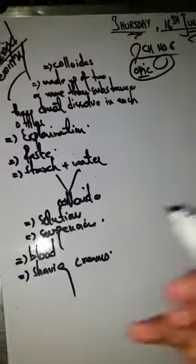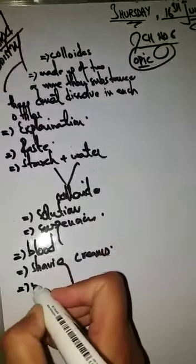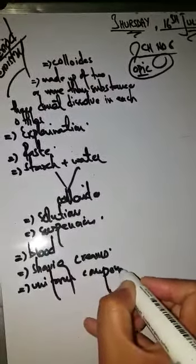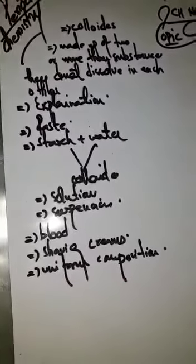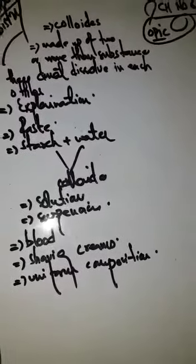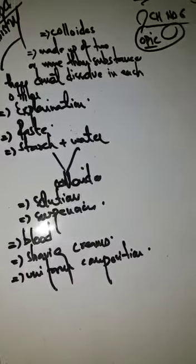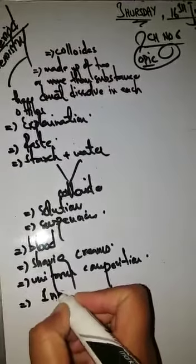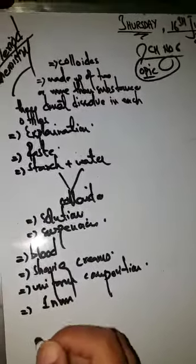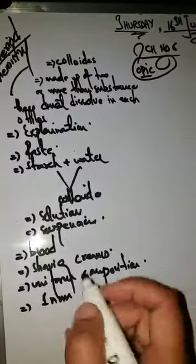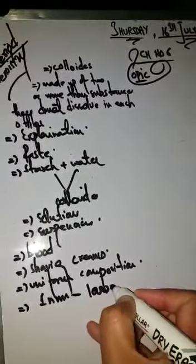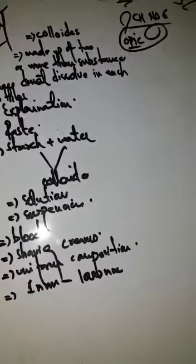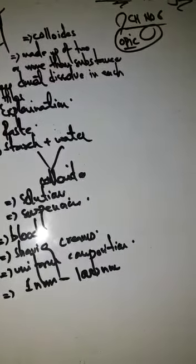The composition of a colloid is uniform — you can say a colloid has uniform composition, meaning it is consistent throughout. Regarding the size of the solute particles, you can say they can range from one nanometer to one thousand nanometers in diameter.